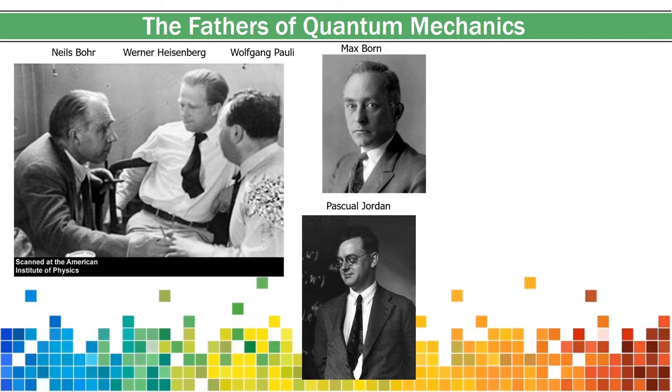Later in that year, the young scientist Wolfgang Pauli would use this new matrix mechanics to solve the hydrogen atom, reproducing the line spectrum, and obtaining energies identical to Bohr's results.